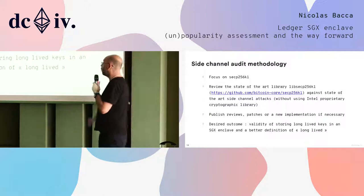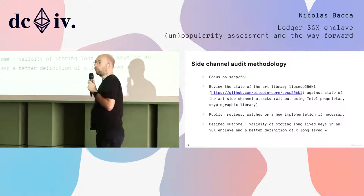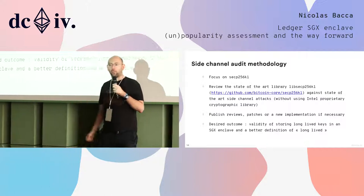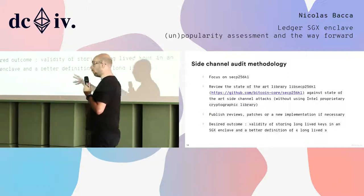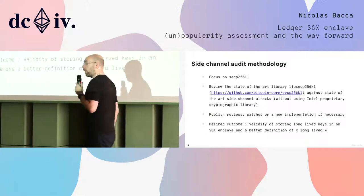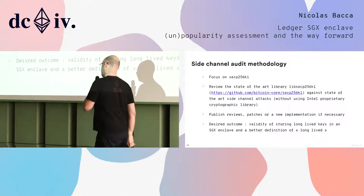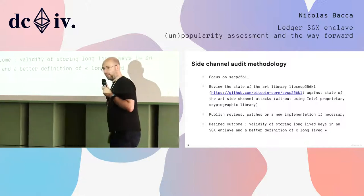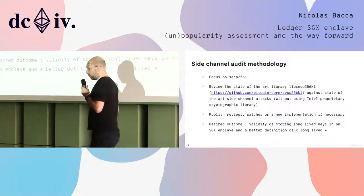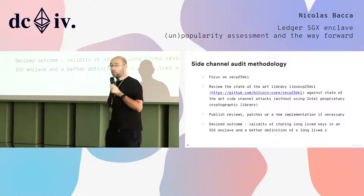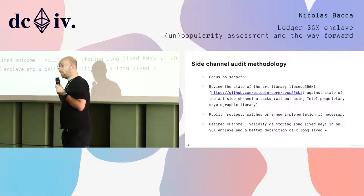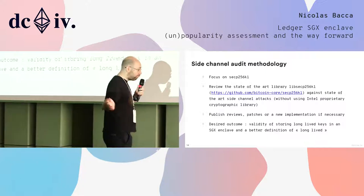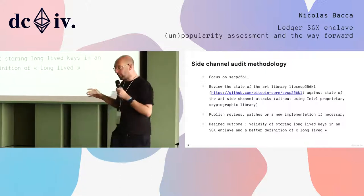How will we proceed with this audit? We'll focus on a single curve — secp256k1 — which is used by a lot of cryptocurrencies today, including Bitcoin and Ethereum. We will review the state-of-the-art library used by multiple projects coming from Bitcoin Core: libsecp256k1. We will test it against state-of-the-art side-channel attacks we have on SGX. We'll publish a detailed review report, write any necessary patches, and rewrite parts if needed. In the end, we want to know if, when, and how long we can safely store keys on SGX.